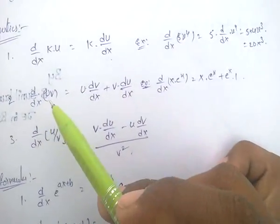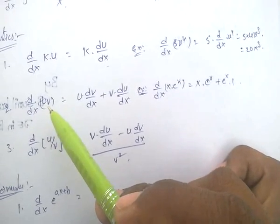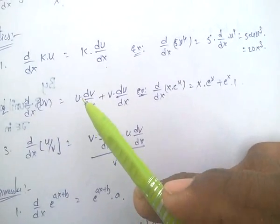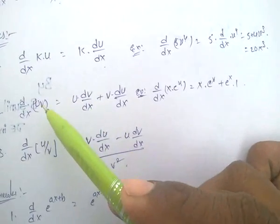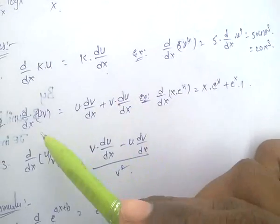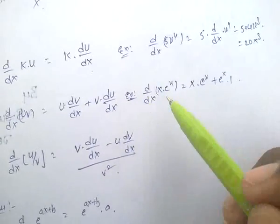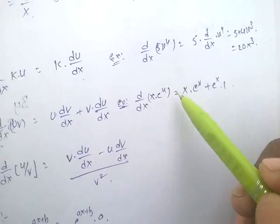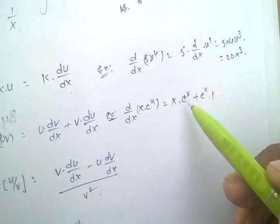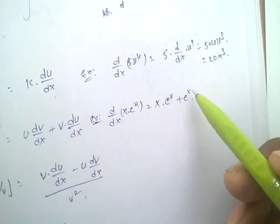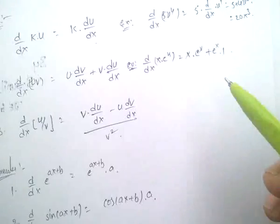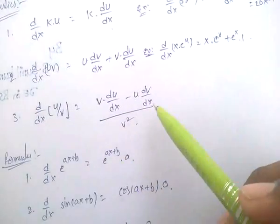d/dx of uv: u is one variable and v is another variable. d/dx of uv equals u into d/dx of v, plus v into d/dx of u. For example, d/dx of x·eˣ: x is kept constant, d/dx of eˣ equals eˣ, then eˣ is kept constant and d/dx of x equals 1. The d/dx of u/v method works the same way.